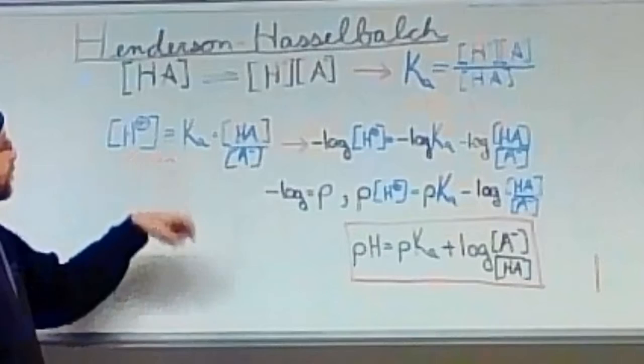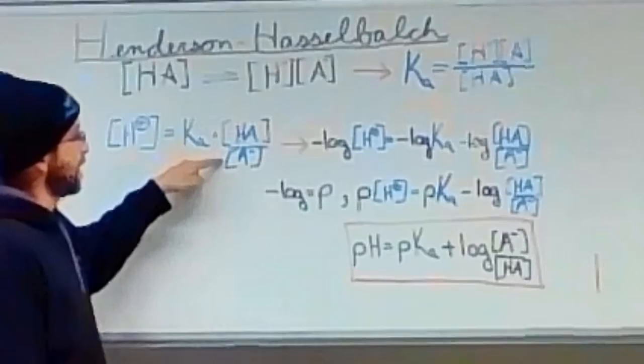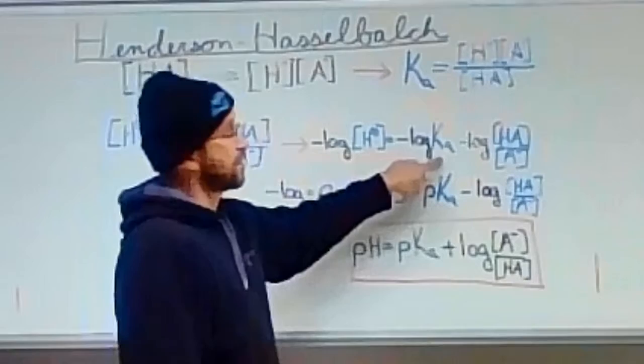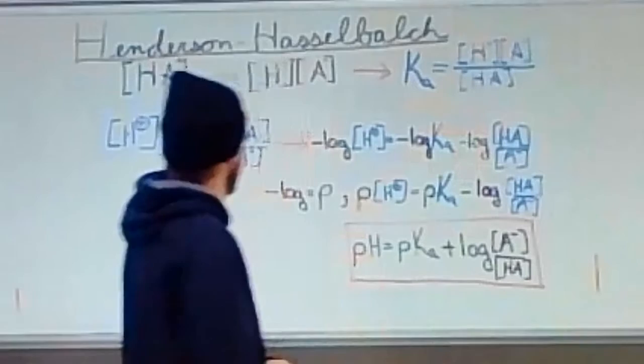We rearrange that equation a little bit. We get the concentration of hydronium then equals the dissociation constant times the protonated acid over the conjugate base. What if we took the negative log of both sides of that equation? The negative log of hydronium concentration equals the negative log of our acid dissociation constant, minus the log of our ratio of protonated acid to conjugate base.